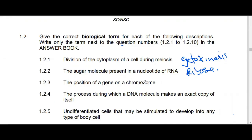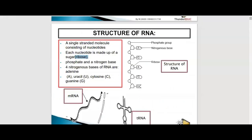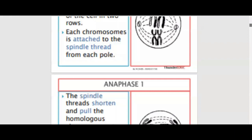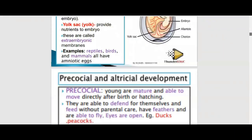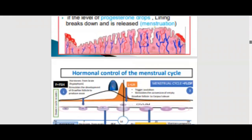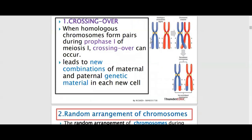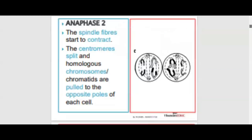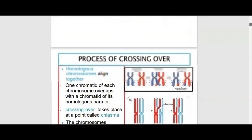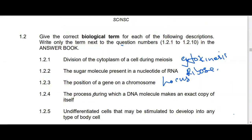The position of a gene on a chromosome is called a locus. If you go to our book at the beginning of genetics, you'll find 'position of the gene on the chromosome' — these are called the locus. If there are many, we call them loci.